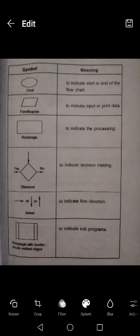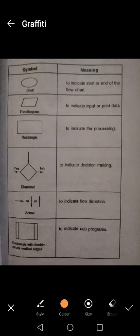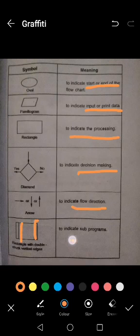And then the parallelogram - this indicates the input as well as the output data. And this is the start or end of the program, oval. And parallelogram is used for input or print the data. And this rectangle is used to indicate the processing. And the diamond symbol is for decision making. Arrow indicates the flow direction. And the rectangle with the two sub edges - these two are the sub edges. This indicates the sub program.